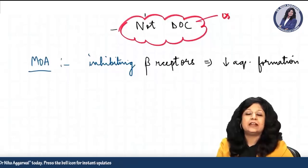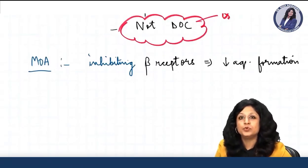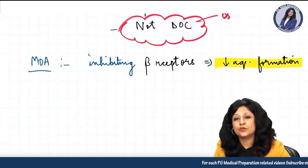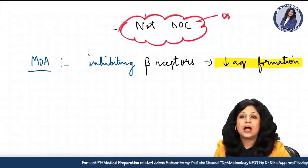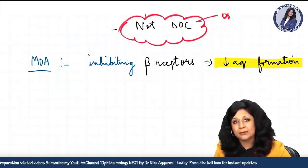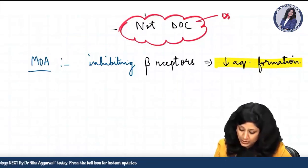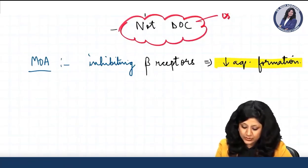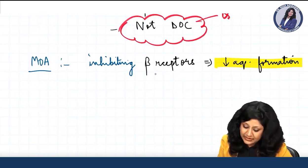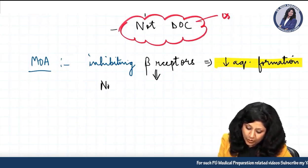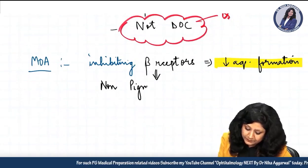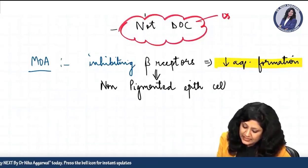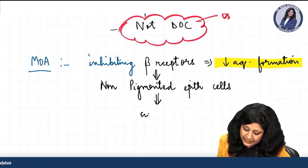Anti-glaucoma drugs fall into two categories: those that decrease aqueous formation, and those that increase outflow — which can be trabecular outflow or uveoscleral outflow. Beta blockers decrease aqueous formation by inhibiting beta receptors located on non-pigmented epithelial cells, which are located on the ciliary processes.